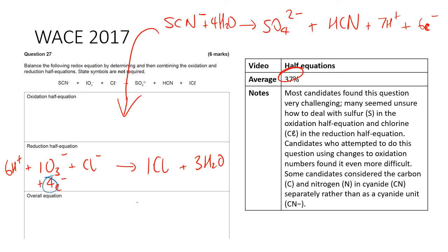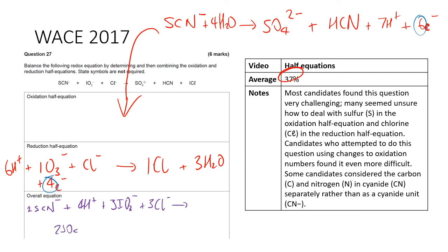To combine the half-equations, find the lowest common multiple of 4 and 6, which is 12. Combining and cancelling gives: 2SCN⁻ + 3Cl⁻ → 2SO₄²⁻ + 2HCN + 3ICl + H₂O. Cancel out hydrogens and waters as needed. I suggest you try this yourself before looking at the final answer. These questions are a little harder but you can get through them. If you have any questions, please come and ask.